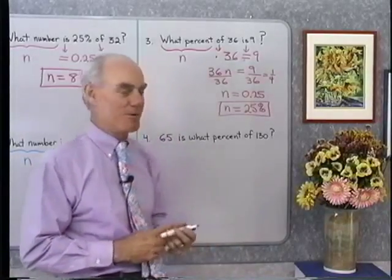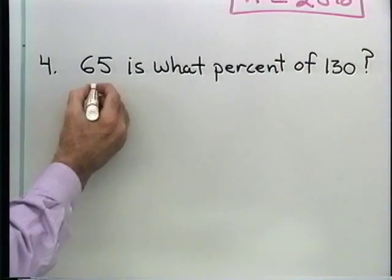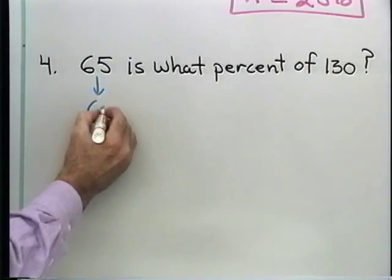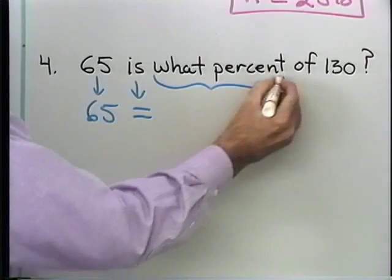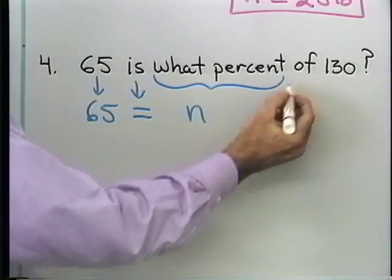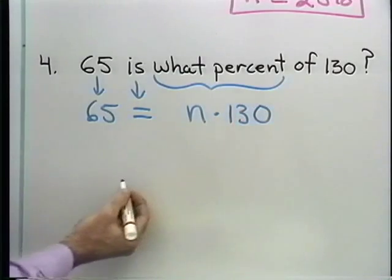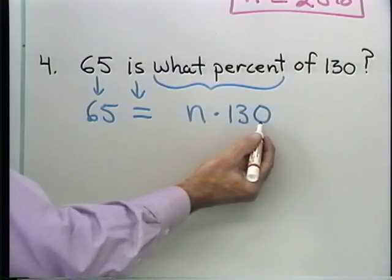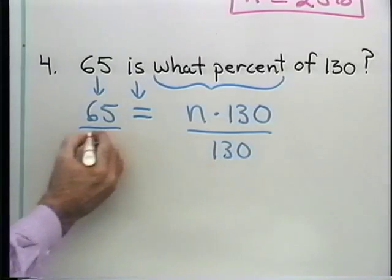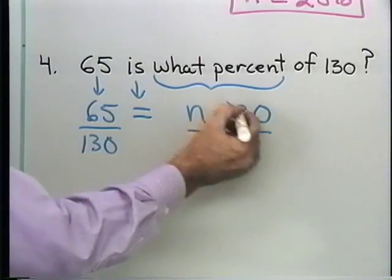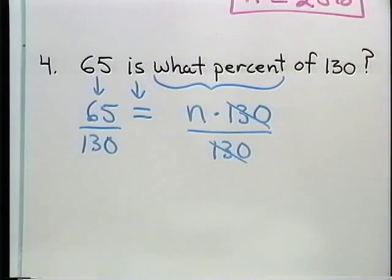Let's look at our next example. 65 is what percent of 130? Let's continue to translate mechanically. 65 is what percent, so n, times of 130. I end up with 65 equals n times 130. I'll divide both sides by 130. So I end up with just n as 65 over 130.